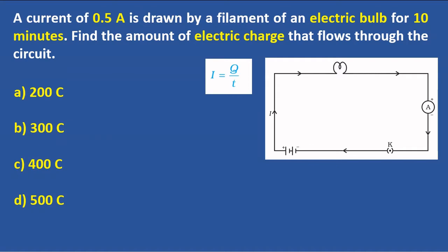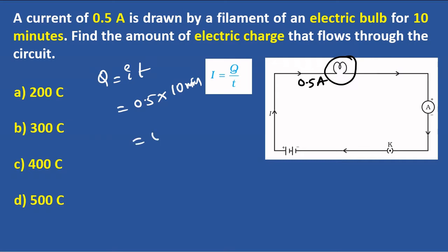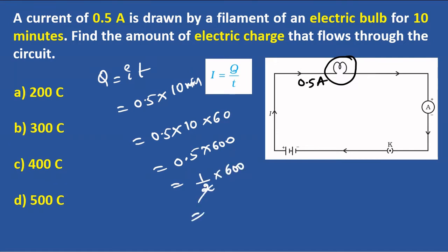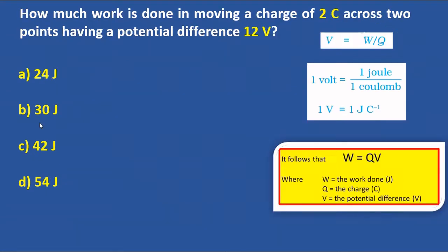The current is 0.5 amperes — this is the electric bulb. The charge Q is given by the formula Q = I × t. Here I is 0.5 amperes and t is 10 minutes, which equals 600 seconds. So Q = 0.5 × 600 = 300 coulombs. The answer is option B.